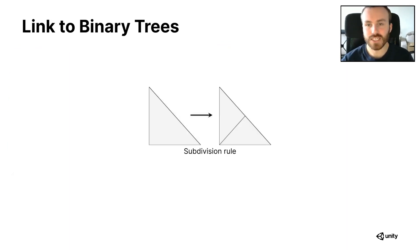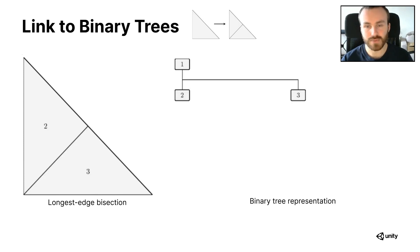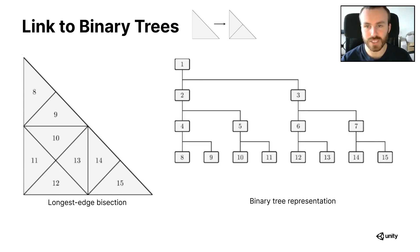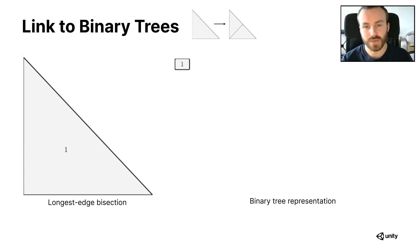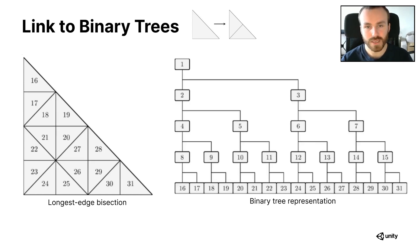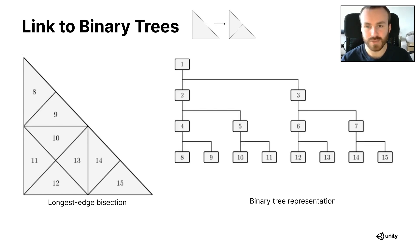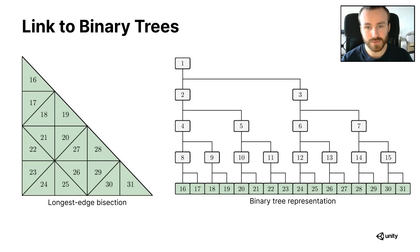So if we look at that longest edge bisection scheme again, we see that it's a binary subdivision rule. Each triangle subdivides into two new triangles. What that means is that we can represent the entire subdivision process as a binary tree, where each bisection creates two children nodes out of a parent node. Here in this uniform subdivision, each new level in the binary tree represents a new subdivision depth, which means that the leaf nodes of the binary tree representation in green here correspond to the triangles we want to display for the subdivision scheme.